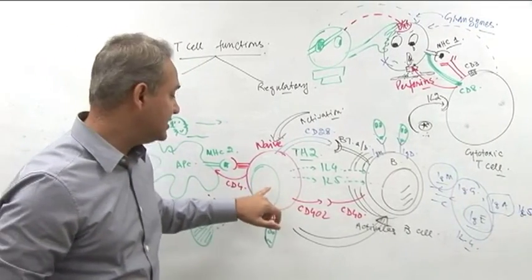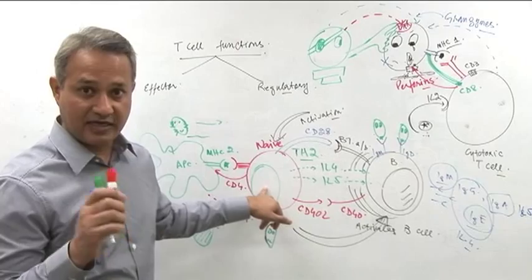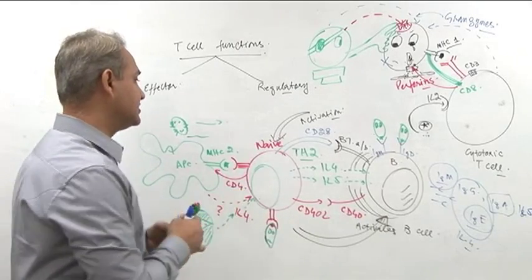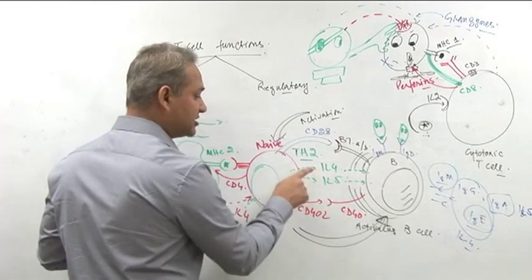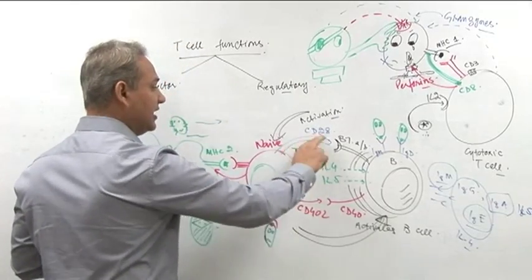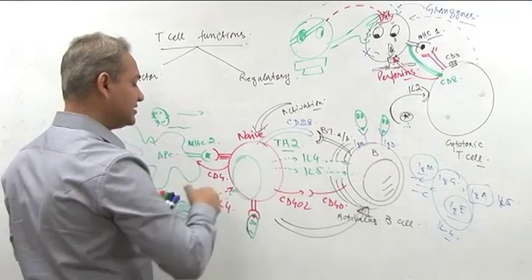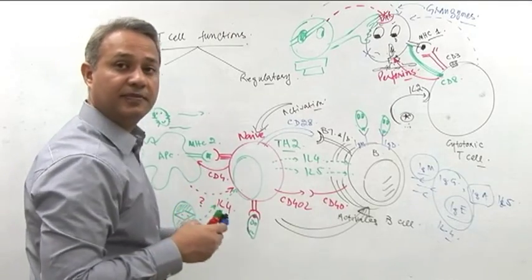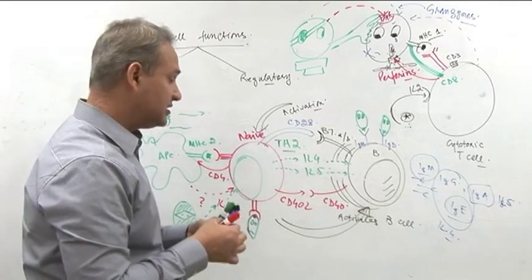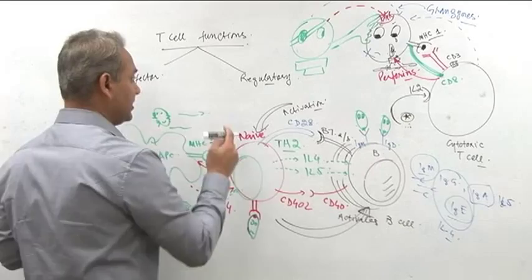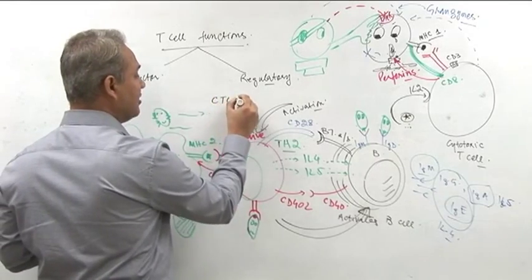What is internal help? This smart cell, again a friend cell, when it becomes active and starts releasing IL-4 and IL-5 and starts having CD40 ligands and CD28, it does one more thing. It starts manufacturing CTLA-4.